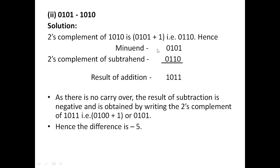Now let's take the subtrahend as 1010. The two's complement of the subtrahend — invert 1010 to get 0101, then add 1 — gives us 0110. Hence if we add 0110 to the minuend 0101, what we get is 1011.